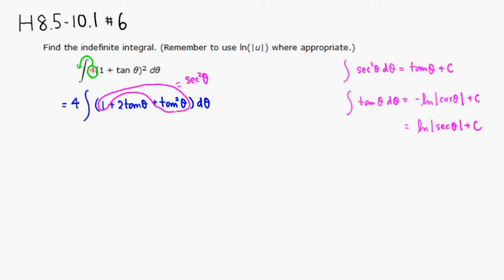So we can take the anti-derivative. The anti-derivative of secant squared is tangent, plus 2 times the anti-derivative of tangent, which is natural log of absolute value of secant of theta, plus some constant c.